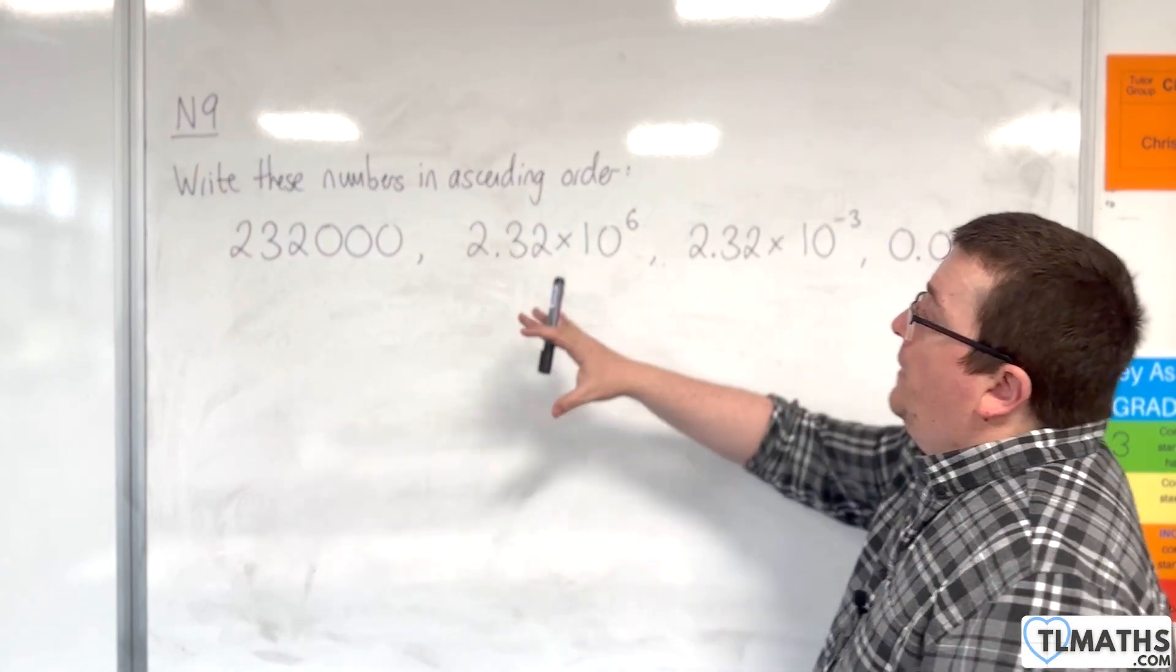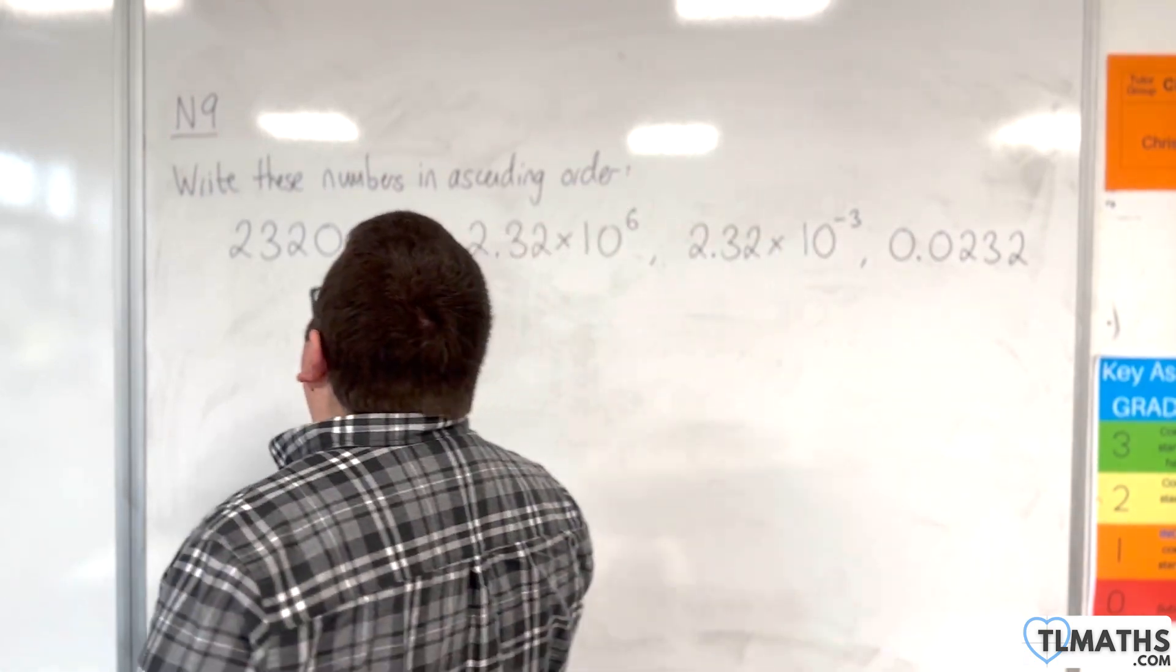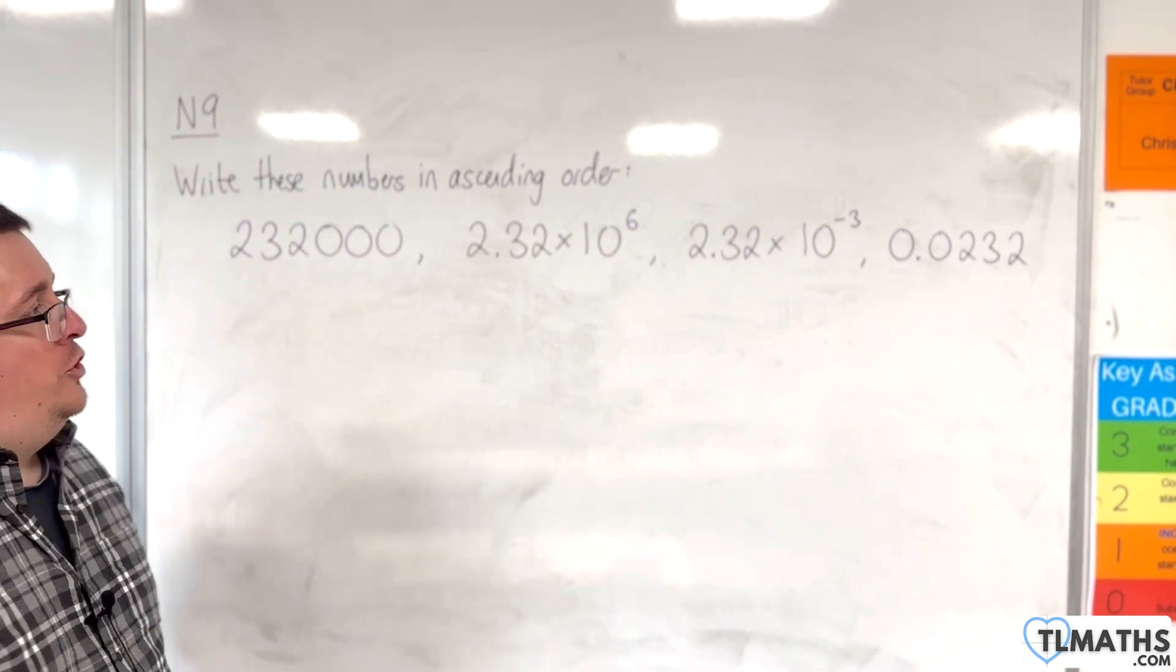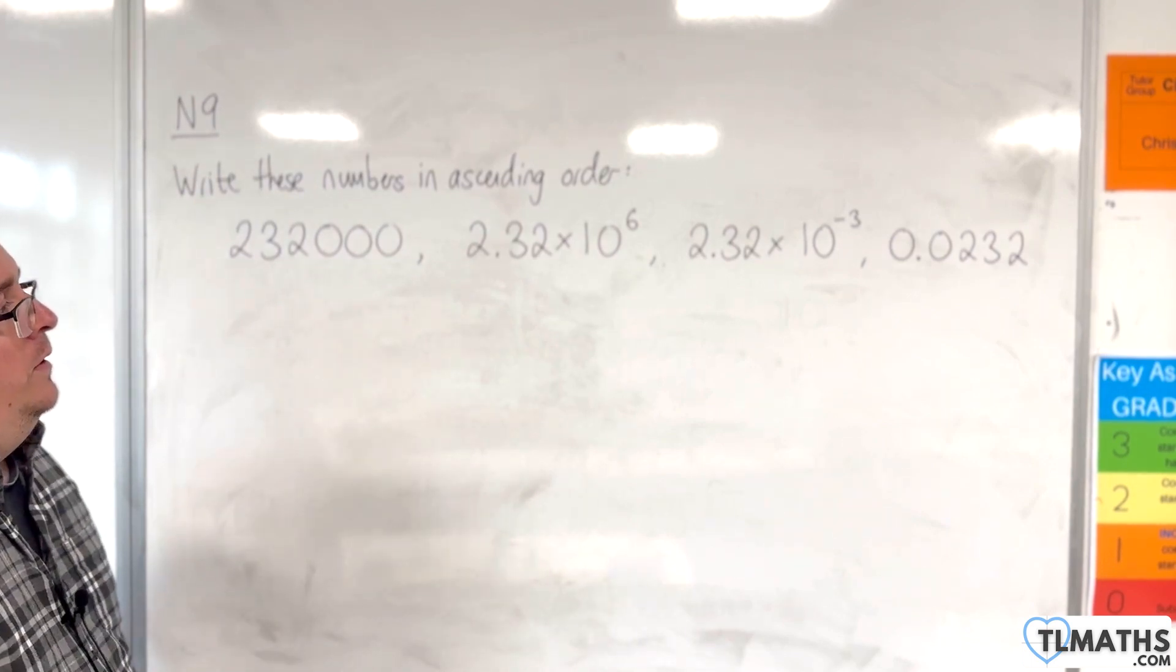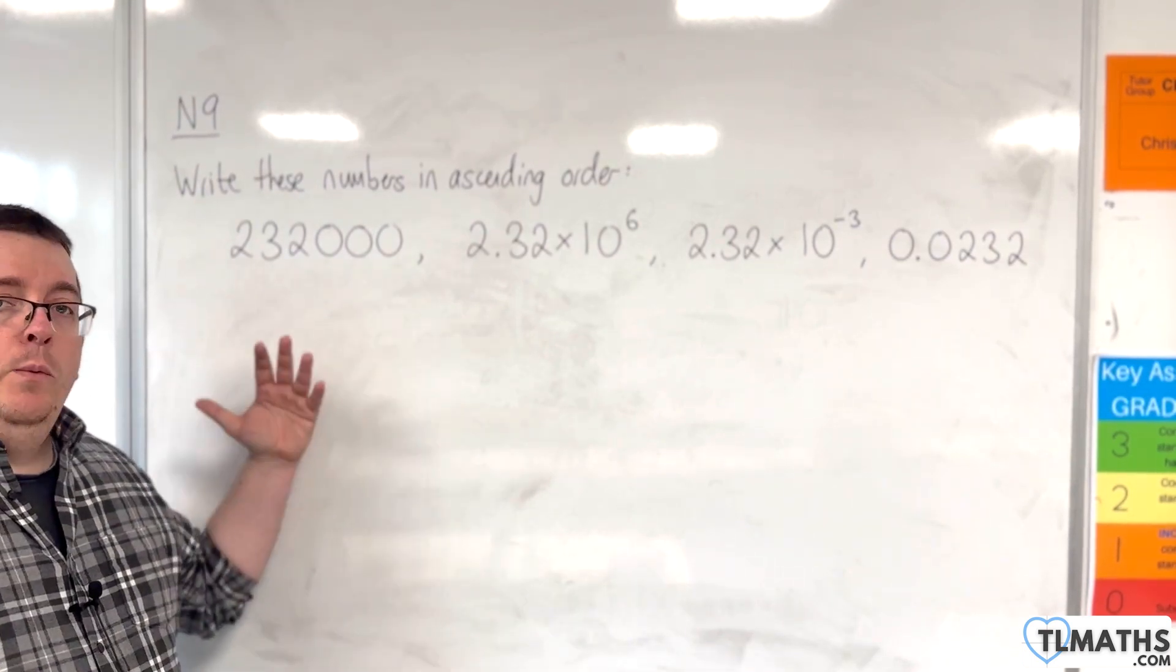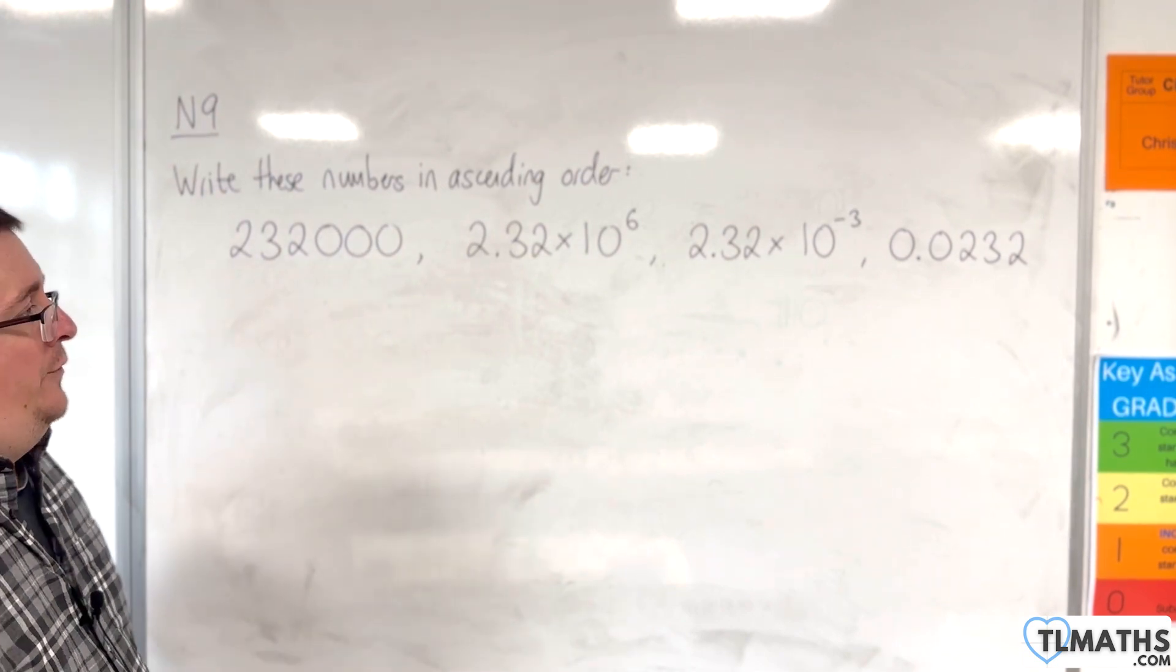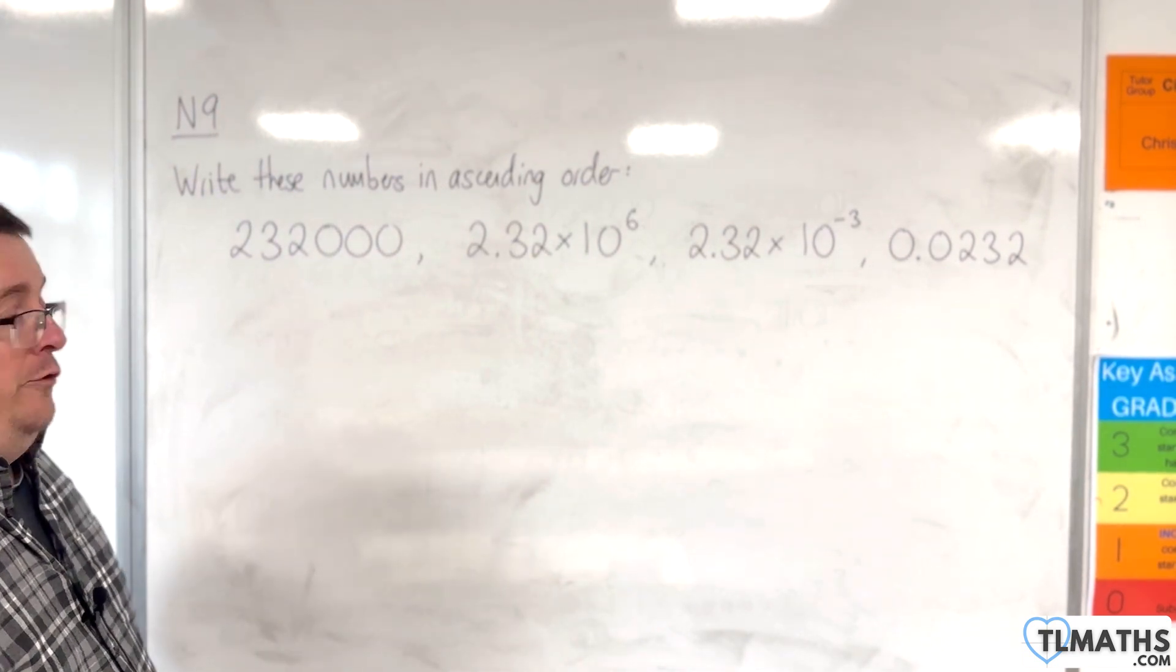So let's say I needed to put these four numbers in ascending order, so from the smallest to the largest. Now, it would be useful if they were all in standard form. That way I could compare them very easily. So that's what I'm going to do.